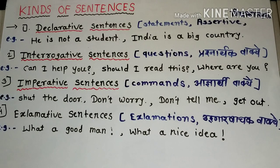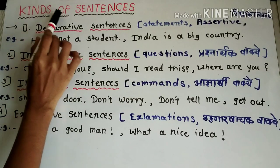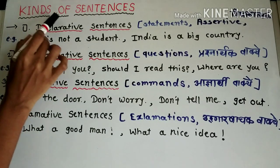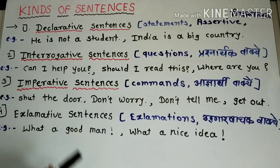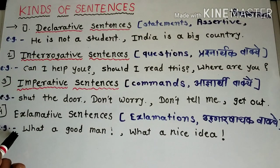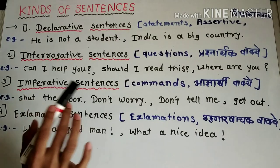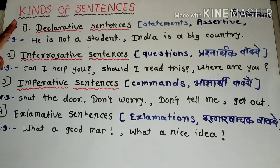Today is the first class, and today we are going to discuss Kinds of Sentences. Kinds of sentences means the types of sentences. There are 4 kinds: the first is declarative sentences, second is interrogative sentences, third is imperative sentences, and fourth is exclamative sentences.